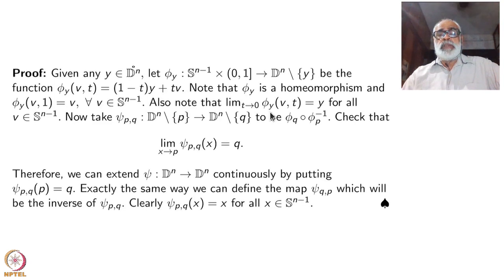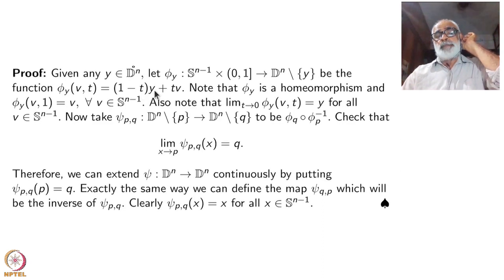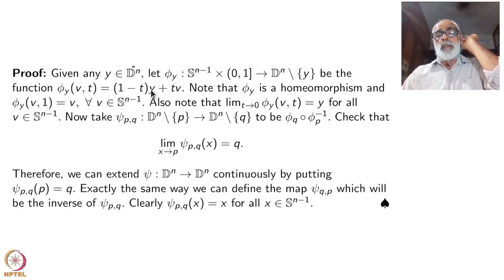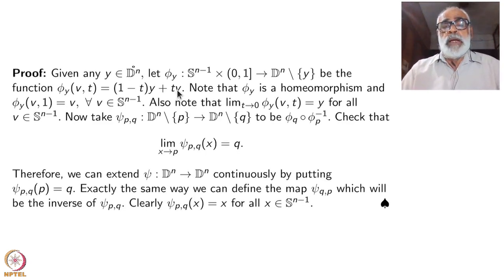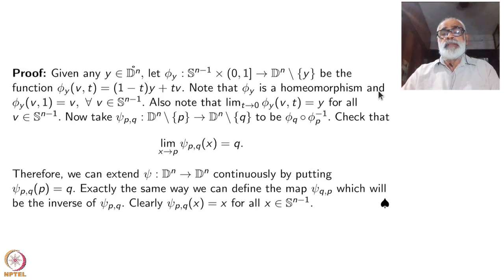Note that φ_y is a homeomorphism. When t = 0 the value is y, and when t = 1 the value is v. So it traces the open line segment joining y to v (excluding y itself). You can write down the inverse map using convexity. Also note that as t → 0, φ_y(v, t) → y for all v in S^(n-1). So φ_y extended to t = 0 would send everything to y, but then it would not be a homeomorphism. This confirms φ_y is a homeomorphism from S^(n-1) × (0,1) to D^n minus {y}.